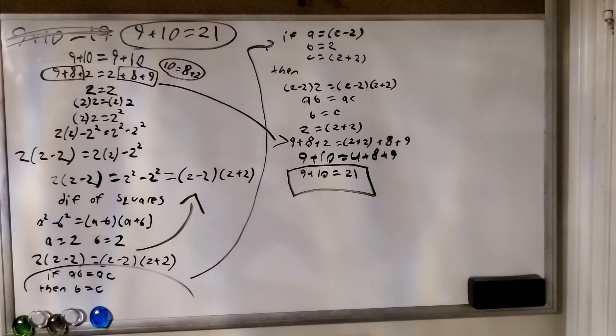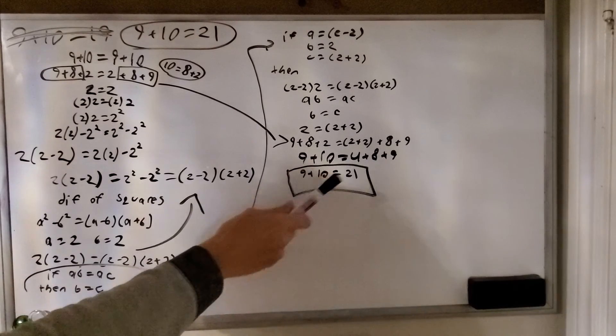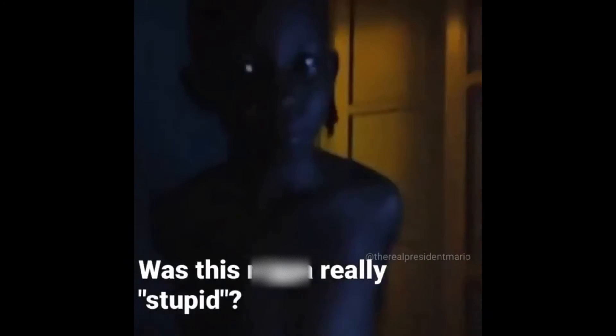And there you have it, a mathematical proof as to why 9 plus 10 equals 21. And to think that this kid did all of this in his head in just a split second. He's truly a genius. A god among men. Now this vine is like 8 years old, so this kid is probably out there in the world right now revolutionizing the field of mathematics.